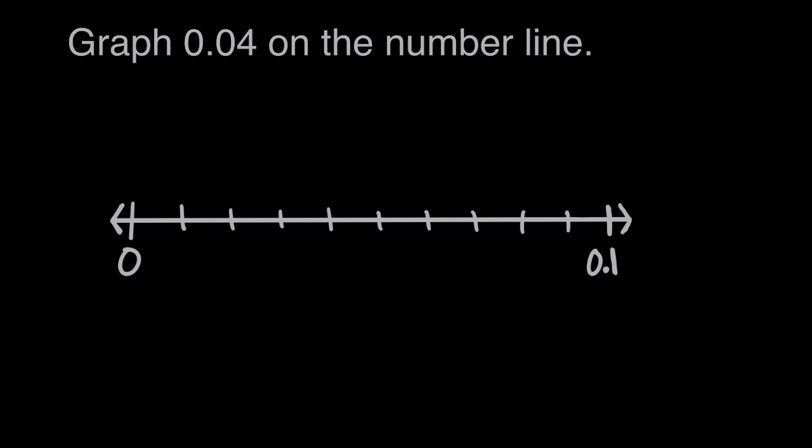Graph 0.04 on the number line. So here we have this number line that goes from zero to 0.1, or 1 tenth.